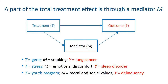In a causal mediation analysis, there are three main types of variables: a treatment variable, an outcome variable, and a mediator variable. The treatment variable is considered to be the root cause of the outcome, and part of its causal effect is mediated through the mediator variable.